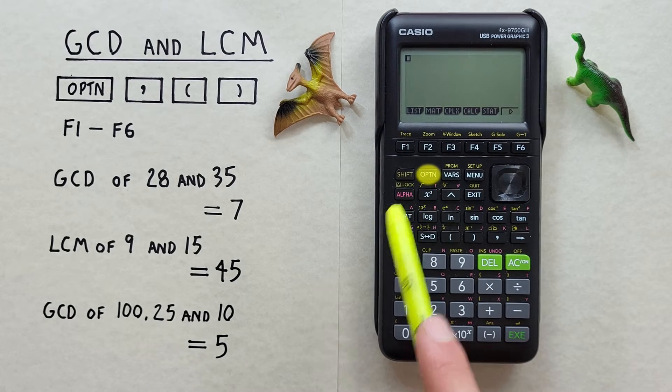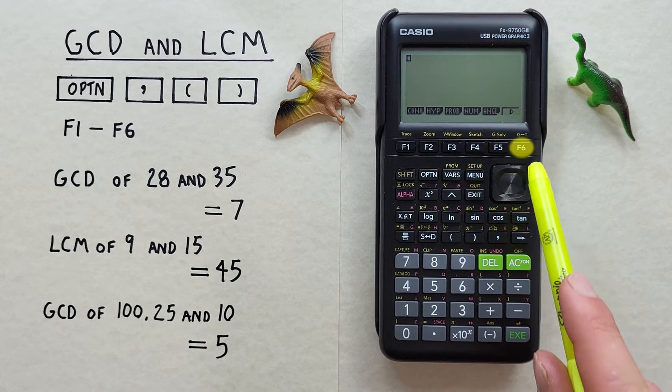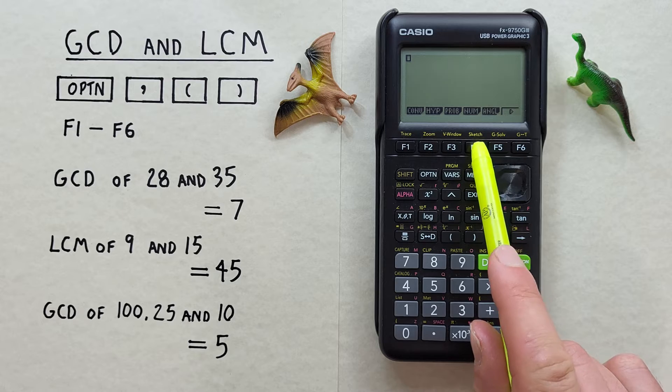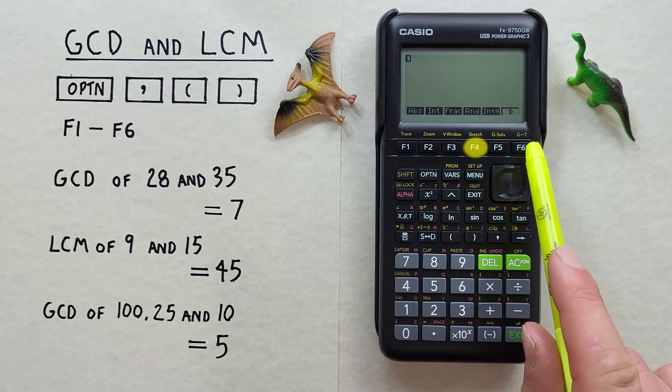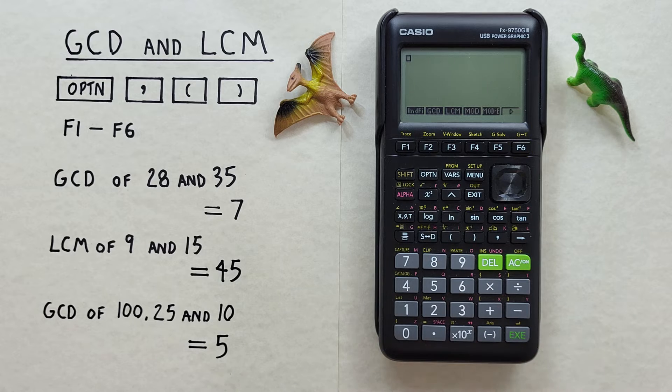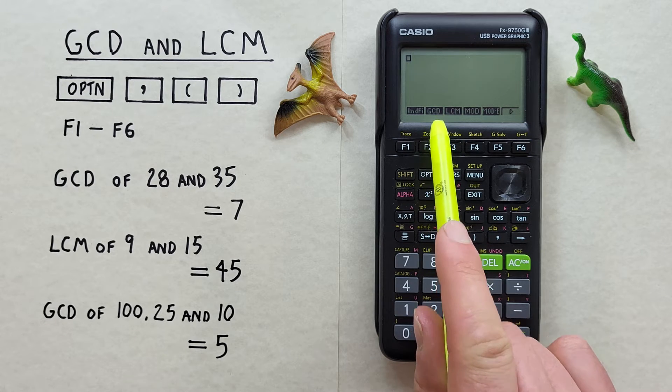then F6, and then F4 for Num, and then F6 again, so that we see this menu here. And now we see F2 is GCD, so we can hit that.